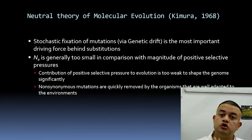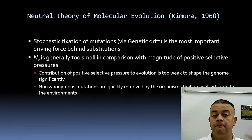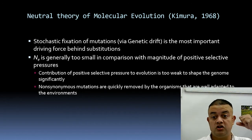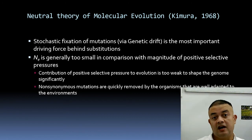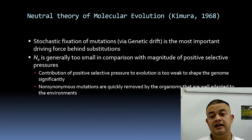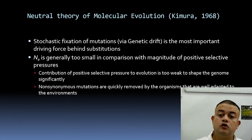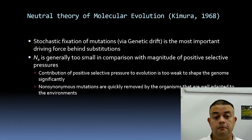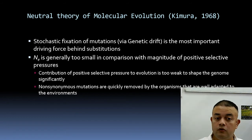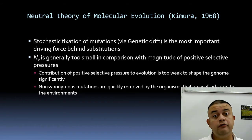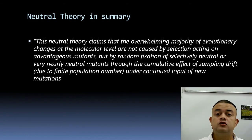Stochastic fixation by drift is the most important driving force behind substitution, as per the neutral theory of evolution. Usually Ne is too small in comparison with the magnitude of positive selection pressure, so that pressure cannot have much impact. The contribution of positive selection pressure to evolution is too weak to shape the genome significantly, and non-synonymous mutations are quickly removed by purifying selection in well-adapted organisms.